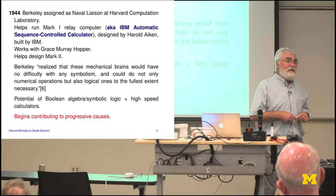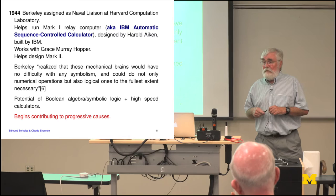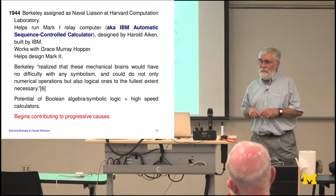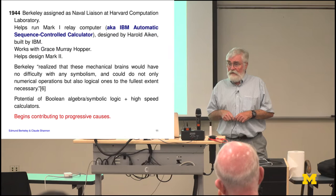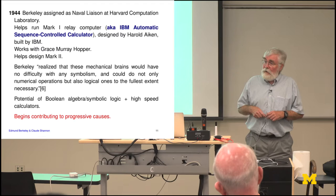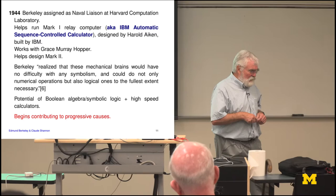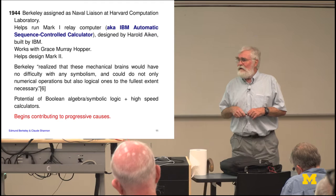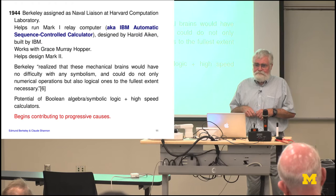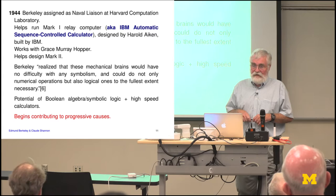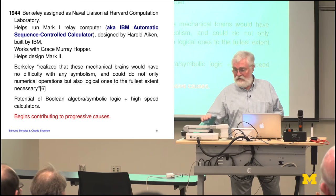Aiken had a reputation as being a lone wolf. Berkeley worked with Grace Murray Hopper, also an officer in the Navy and later Admiral, and helped design the next machine, the Mark II. Many of the quotes about Berkeley come from extensive memoranda and correspondence he kept, all now available at the Charles Babbage Institute at the University of Minnesota. Berkeley again noted the potential of Boolean algebra and symbolic logic combined with high-speed computers — it was really Berkeley, not Shannon, who made that broader connection.